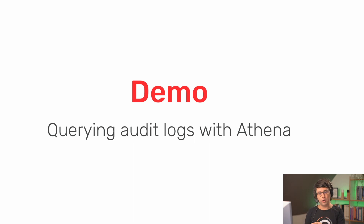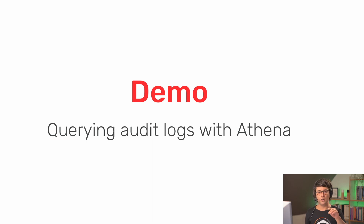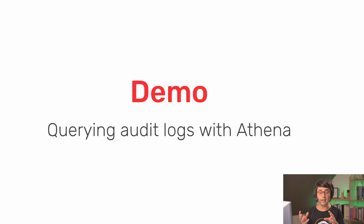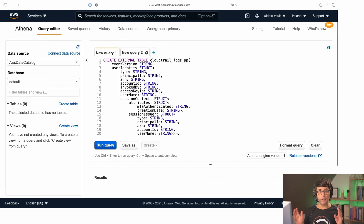The next demo is about querying the same audit logs but those stored on S3 rather than in CloudWatch Logs. The reason this is interesting: you can configure CloudTrail to send logs to one S3 bucket that collects audit logs from all your AWS accounts, allowing centralized analysis. That's why Athena is a good way to analyze CloudTrail logs stored on S3.